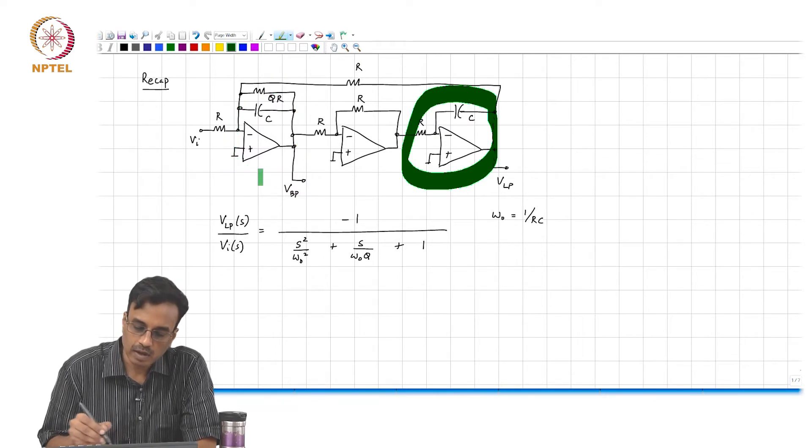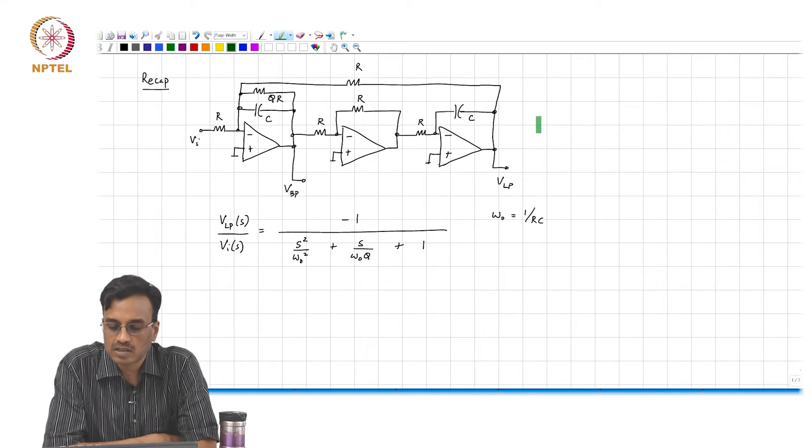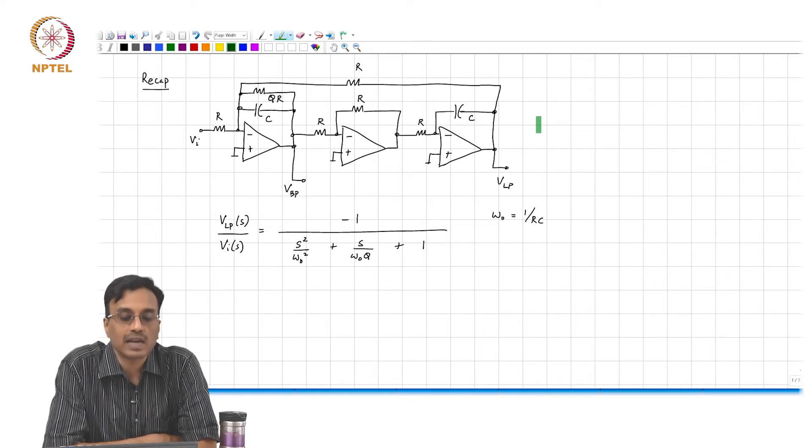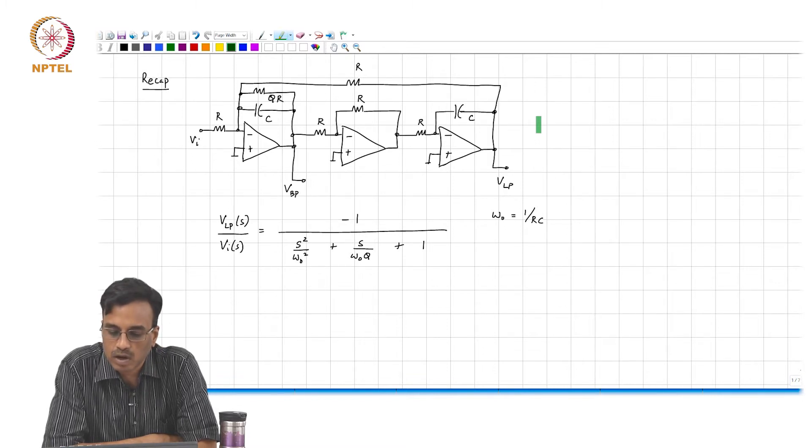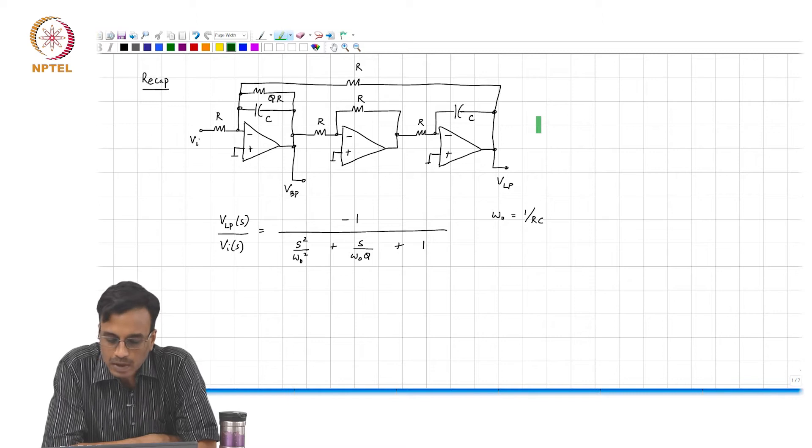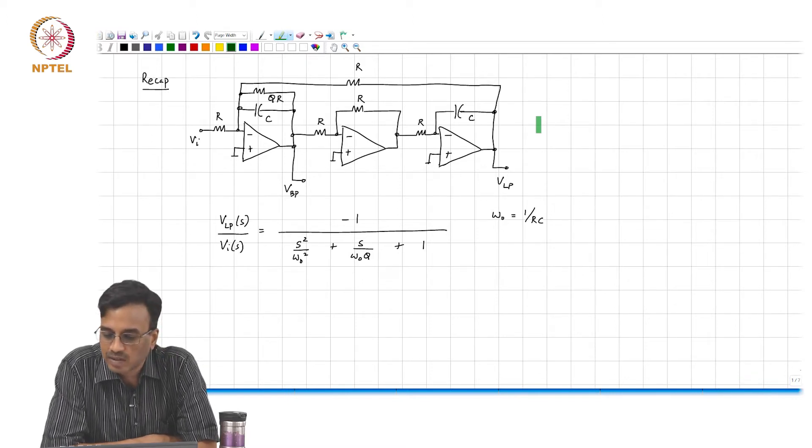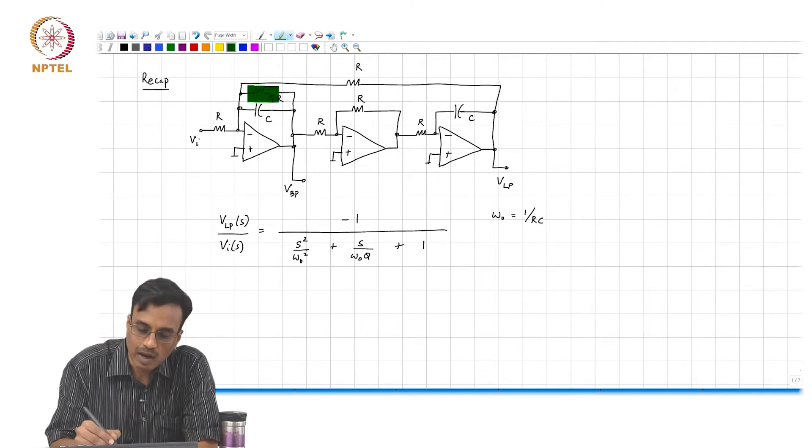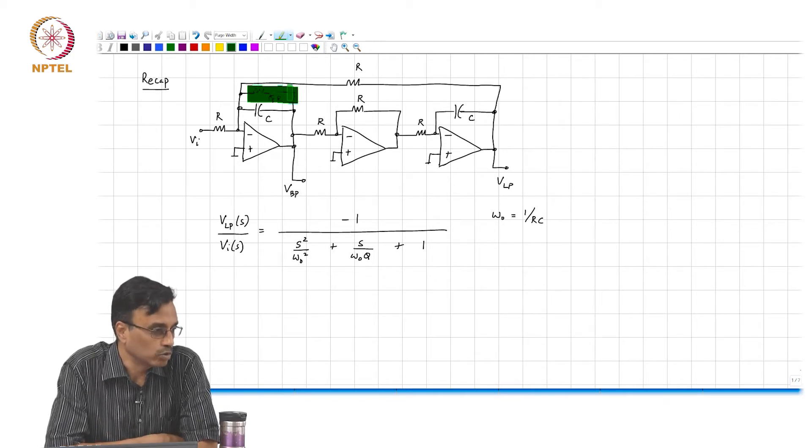You can think of a biquad as a feedback loop consisting of a leaky integrator and a non-leaky integrator put inside a loop. And this choice of resistors and capacitors makes omega naught equal to 1 over RC, and that resistor q times r is just there to set the quality factor of the closed loop.